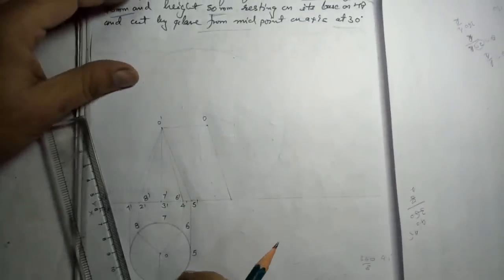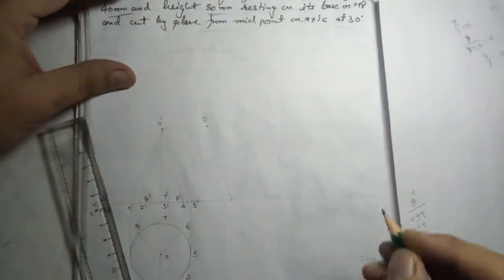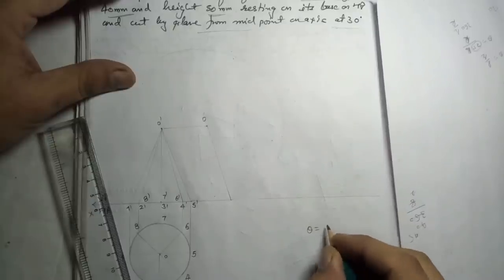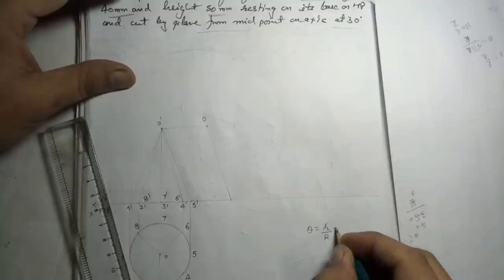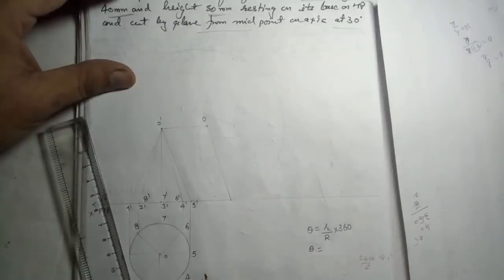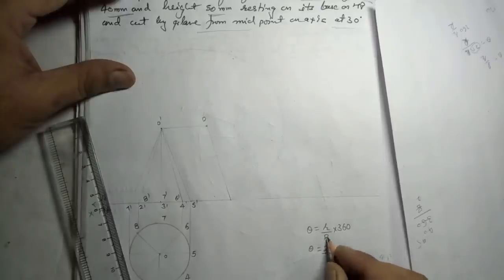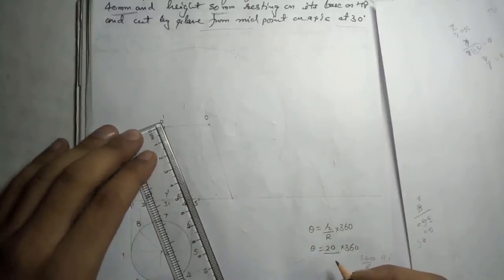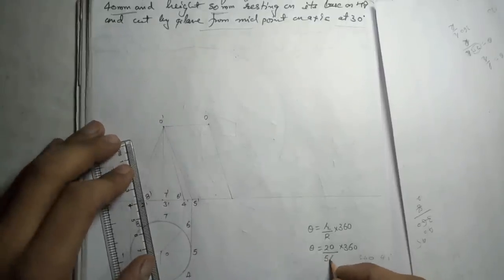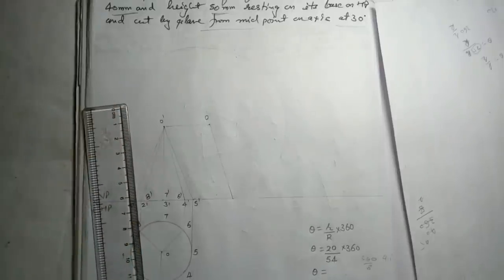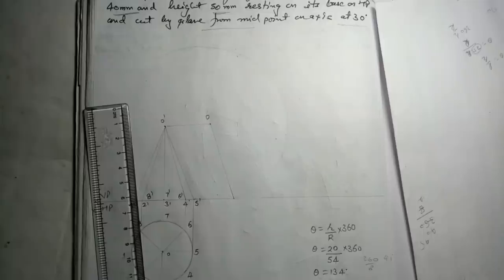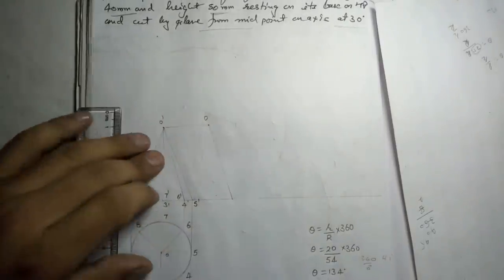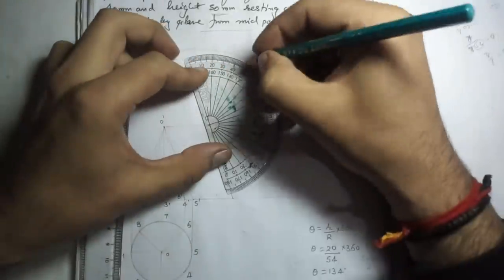There are two methods to develop this and get the length: the angle method, or the part method — opening the compass and taking parts. We use the formula theta equals (r divided by R) into 360. Here r, the radius of the circle, is 20; R is the slant height. Measuring the slant height gives 54. Calculating: theta = (20/54) × 360 = 134 degrees. We will mark a 134-degree angle here.